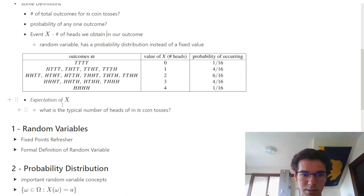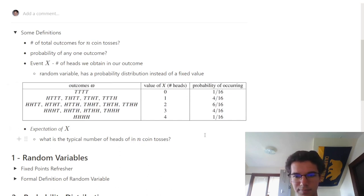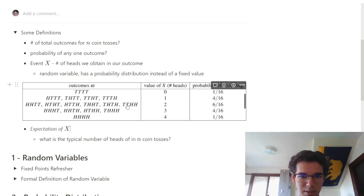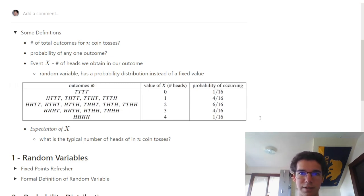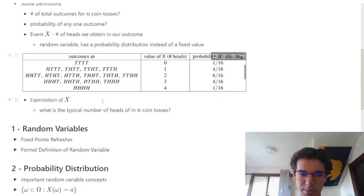There's another thing called the expectation of X, which is basically the typical number of heads given that we toss n coins. The typical number of heads is 2, because there are 6 sample points out of 16 that have 2 heads. That makes sense because if heads has a 1/2 chance of showing up and we toss the coin 4 times, we'd expect to see heads twice.